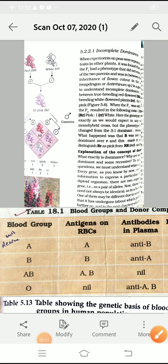Students, today we are going to discuss two very important phenomena of genetics: co-dominance and incomplete dominance. First, we are going to discuss incomplete dominance. As we all know, the law of dominance states that out of two contrasting alleles, only one can express itself in an individual. The allele which expresses itself is known as dominant, while the other which does not show its effect is termed recessive.